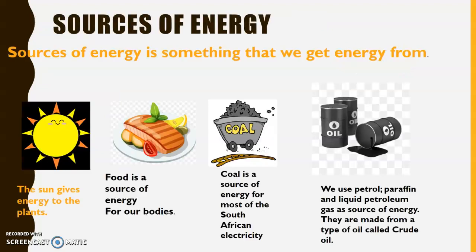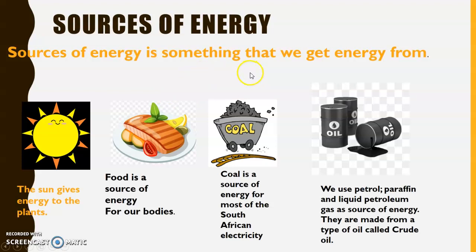Then we have to move on to learn about sources of energy — where do all of these five types of energy come from? Sources of energy is something that we get energy from. The most common sources include the sun, which gives energy to plants, gives us light energy to see each other, and gives us heat energy to keep us warm. Food is also a source of energy for our bodies. If someone is running, they have movement energy, but the source of their movement energy is the food they ate — the food gave them energy to run.